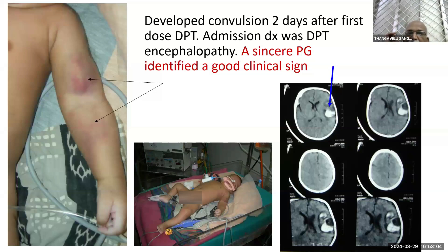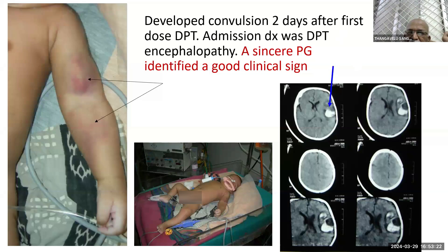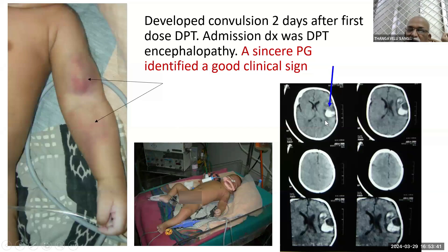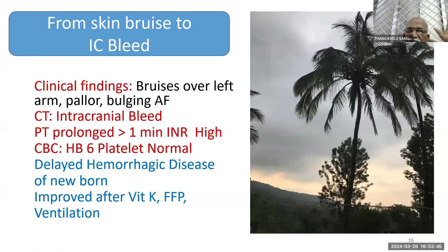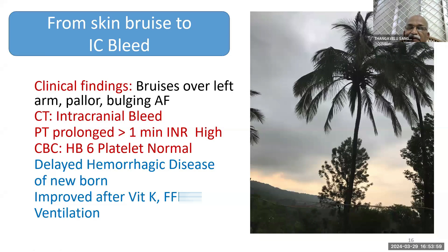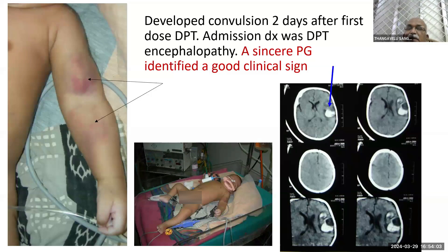Next case: a child was brought to the ICH emergency room on a Friday afternoon. History: the child was given DPT on Wednesday evening. Naturally, the blame was put on the free vaccine — admission diagnosis was DPT encephalopathy. Our young postgraduate was very sincere and curious. He noticed bruises on the arm and brought it to my attention. Once you see bruises or ecchymosis in a child with convulsions, it indirectly indicates intracranial bleed. We did a CT scan, which showed intracranial hemorrhage. The child had bruising of the left arm, pallor, and a bulging anterior fontanelle. PT was prolonged; CBC showed normal platelets and low hemoglobin. We were actually managing a child with delayed hemorrhagic disease of the newborn, who improved after vitamin K, FFP, and ventilation. Meticulous clinical examination saved the child — otherwise nobody would have ordered a CT scan for an assumed DPT reaction. A good clinical examination brings out very important findings.